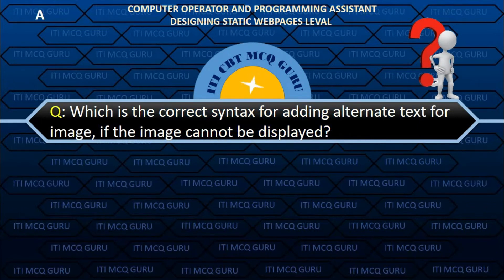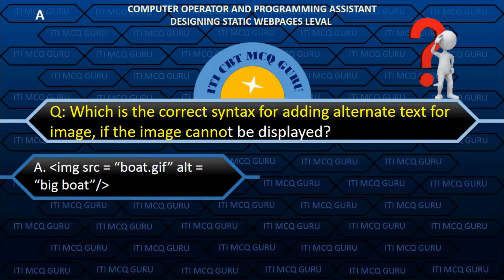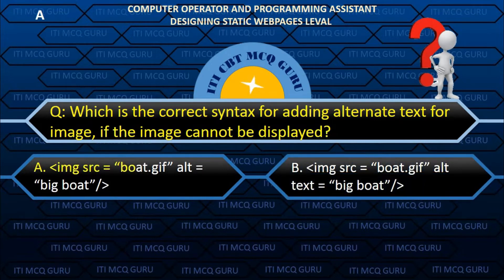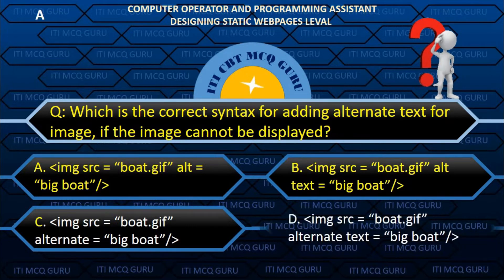Which is the correct syntax for adding alternate text for an image if the image cannot be displayed? A. img src equals both.gif alt equals big both slash.